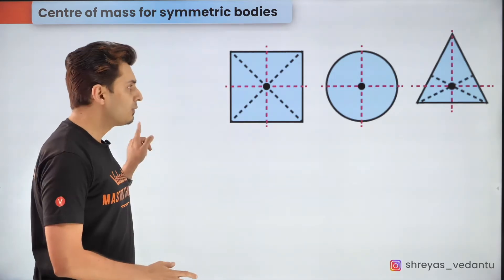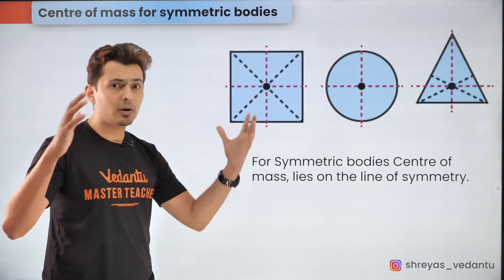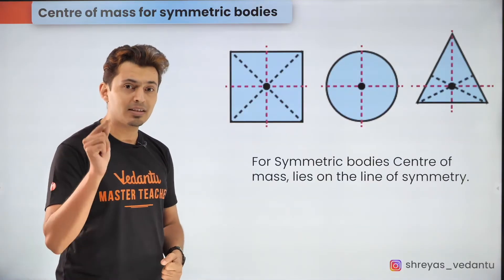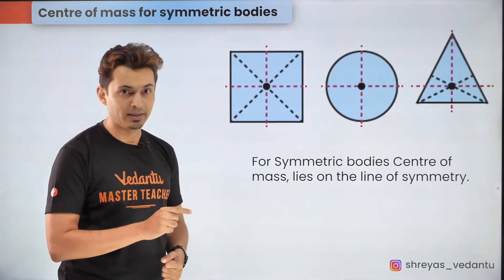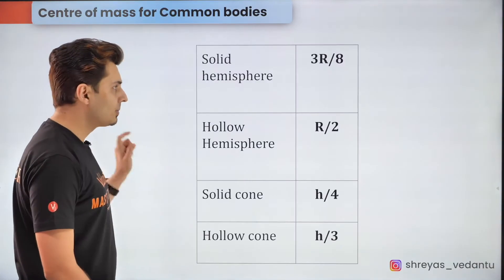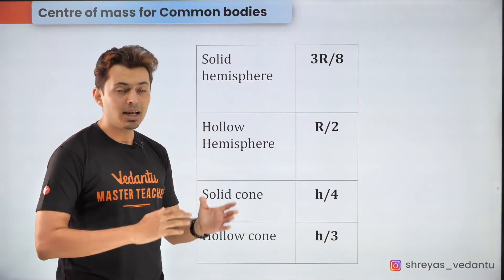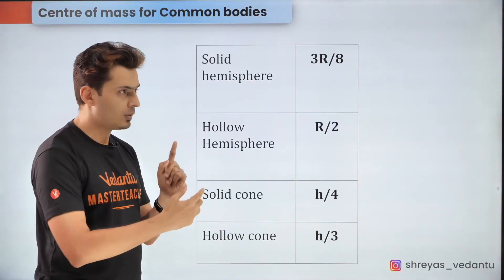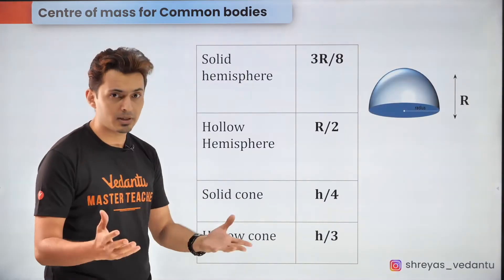For all the objects which have a point symmetry and are homogeneous the center of mass is located at the point of symmetry. But for all those objects which have a line symmetry and they are symmetric about some kind of line the center of mass formulas needs to be memorized.